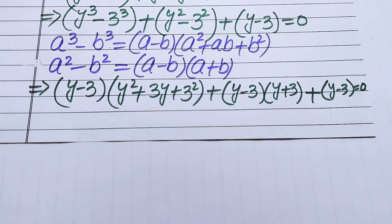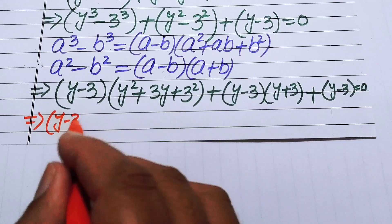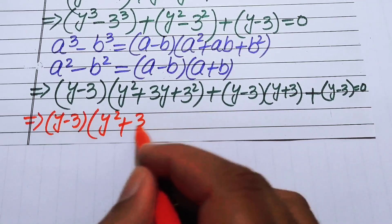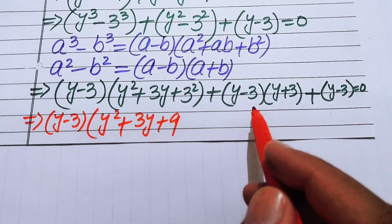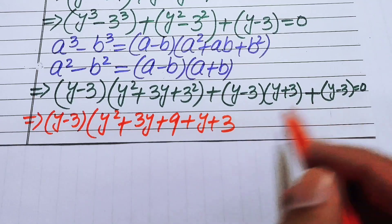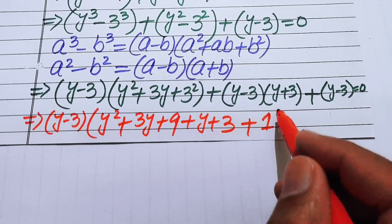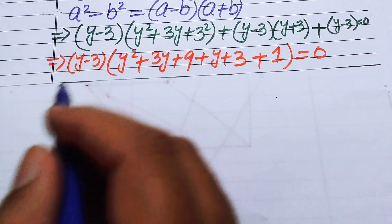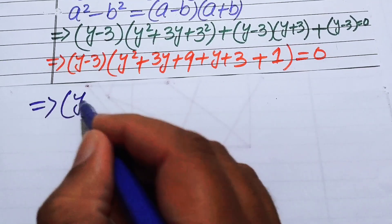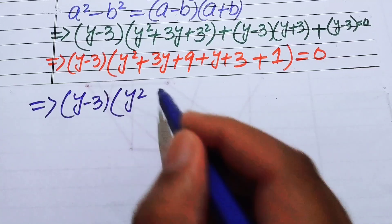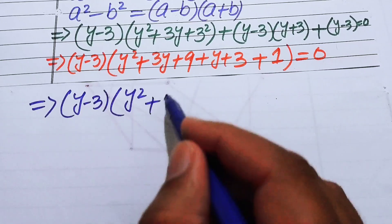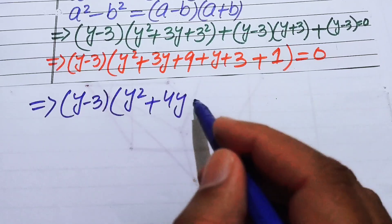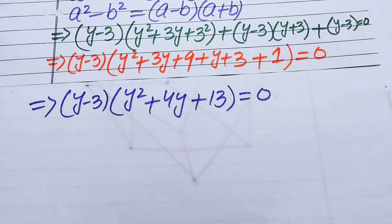We see that (y minus 3) is the common factor in every term. Factoring it out gives us (y minus 3) times (y² plus 3y plus 9 plus y plus 3 plus 1) equals 0. Simplifying inside: 3y plus y is 4y, and 9 plus 3 plus 1 is 13, so we get (y minus 3)(y² plus 4y plus 13) equals 0.